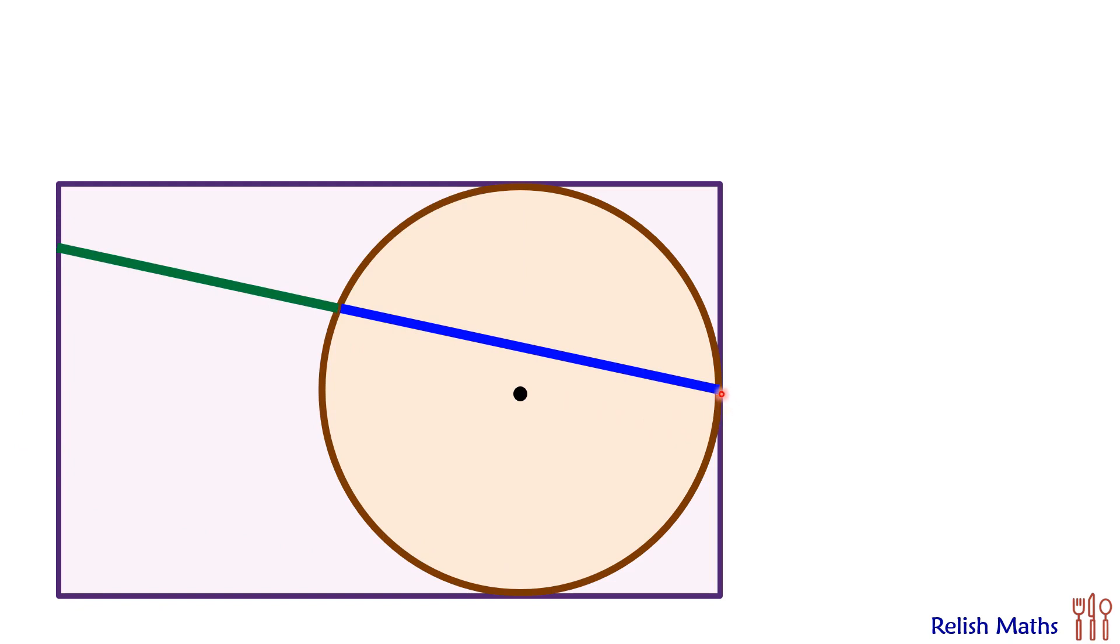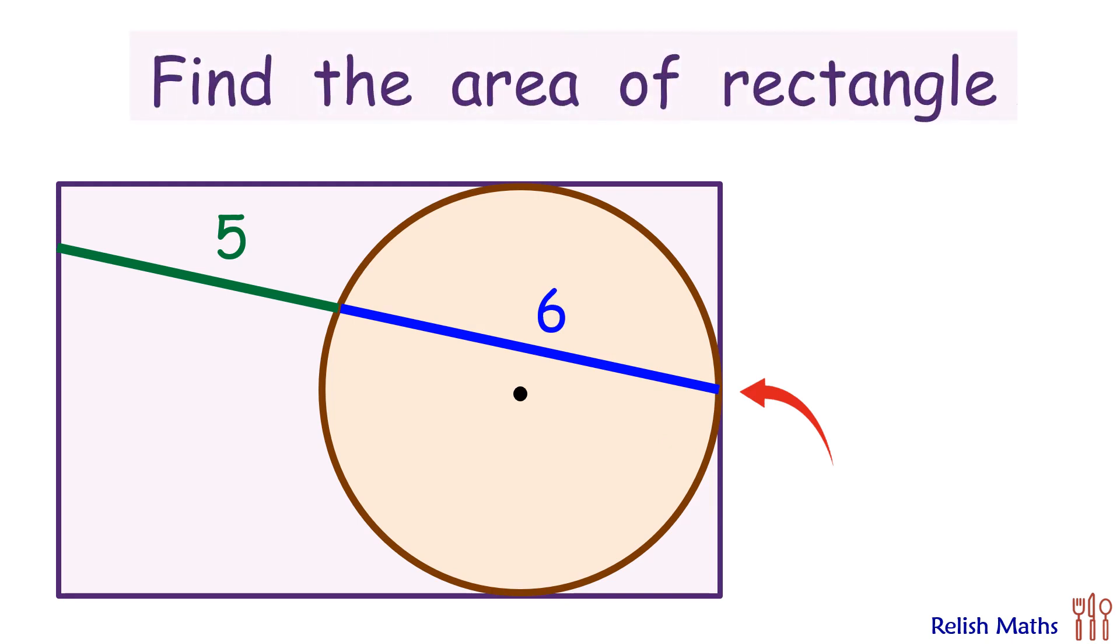Let's check the question. We have a rectangle, inscribed in it we have a circle. We are drawing a line segment across the breadth of the rectangle, and here it's touching at the tangential point of the tangent, and this length is given as 5 centimeters. The chord length inside the circle is given as 6 centimeters. That's it. Using only this data, we have to find the area of the rectangle.